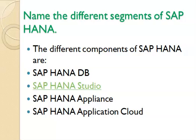Name the different components of SAP HANA. The different components of SAP HANA are: SAP HANA DB, SAP HANA Studio, SAP HANA Application, and SAP HANA Application Cloud.